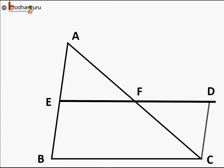Now in triangle AEF and triangle CDF: angle FAE is equal to angle FCD — the alternate angles. AE is equal to CD, which is now proved. And angle AEF is equal to angle CDF — vertically opposite angles. So triangle AEF and triangle CDF are congruent by the ASA rule. So AF is equal to FC, meaning F is the midpoint of AC.